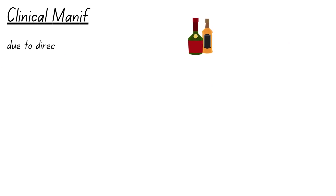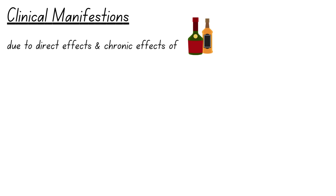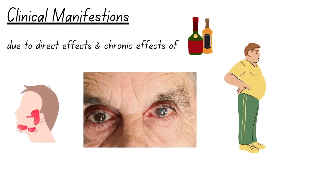The clinical features of alcoholic liver disease result from both chronic alcohol intake and the direct effects of alcohol on the liver. Chronic alcohol consumption can lead to parotid swelling as well as signs such as plethora, redness of the cheeks, and obesity due to excess calorie intake. Alcoholic liver disease manifests in three primary pathologies: fatty liver, alcoholic hepatitis, and cirrhosis.